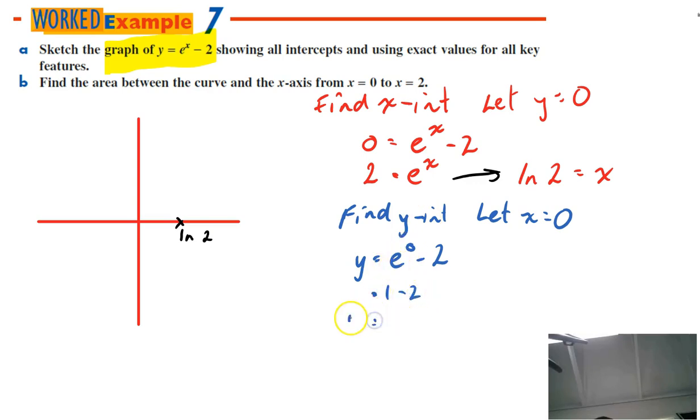e to the 0 is 1, 1 minus 2, so y is negative 1. Okay, so I have another value here at negative 1. And I can draw a sketch. It's an exponential function, so it's going to look something like heading off there into space. Alright, so there's my sketch.